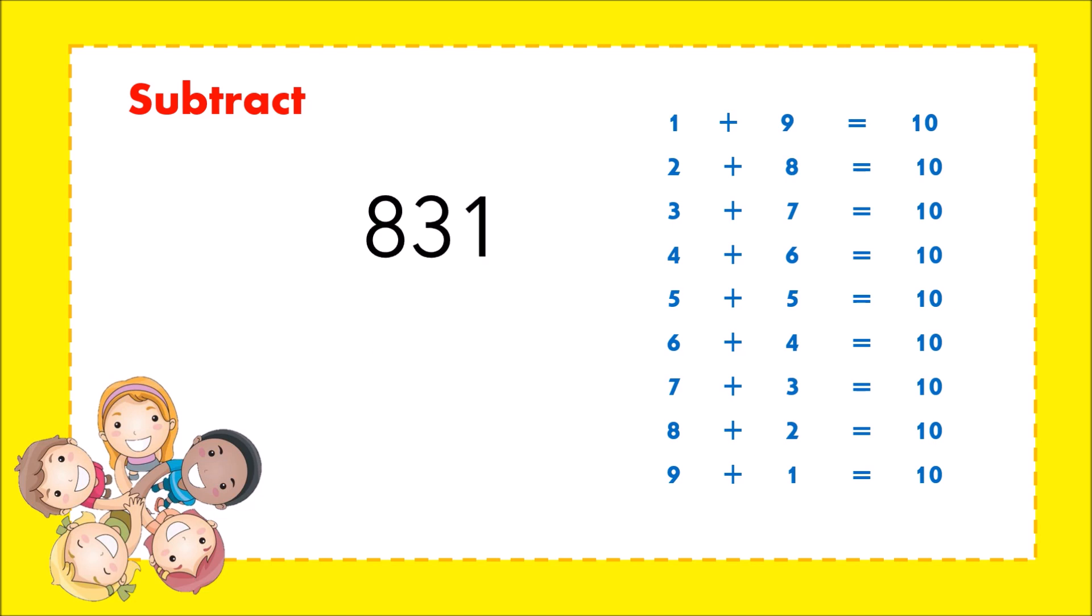831 minus 48. As you can see, it's not possible to take away 8 from 1, so we will use partner numbers. Partner of 8 is 2. Add 2 to 1 and the answer is 3. Then borrow 1 from 3. 3 becomes 2.